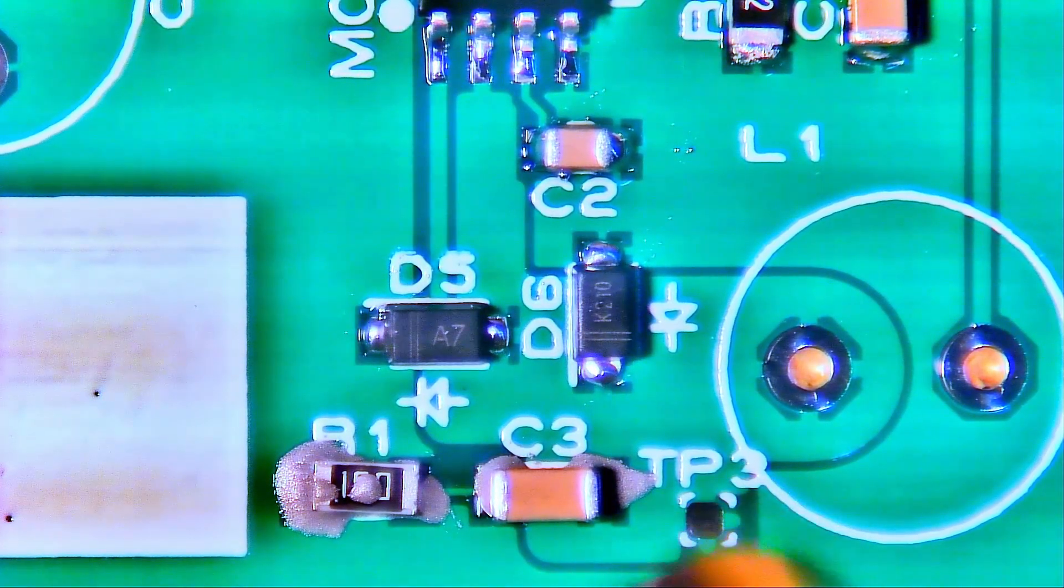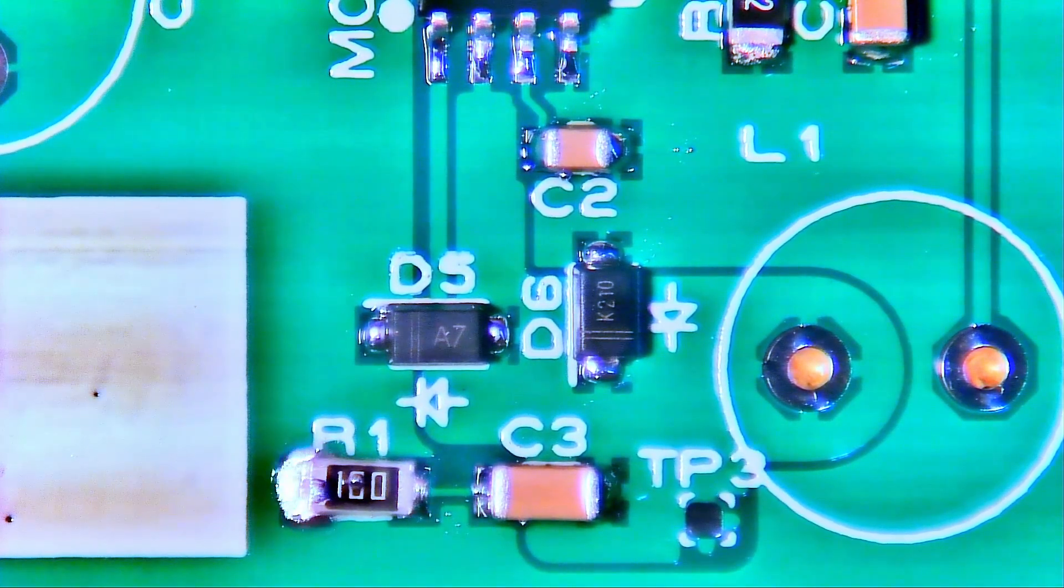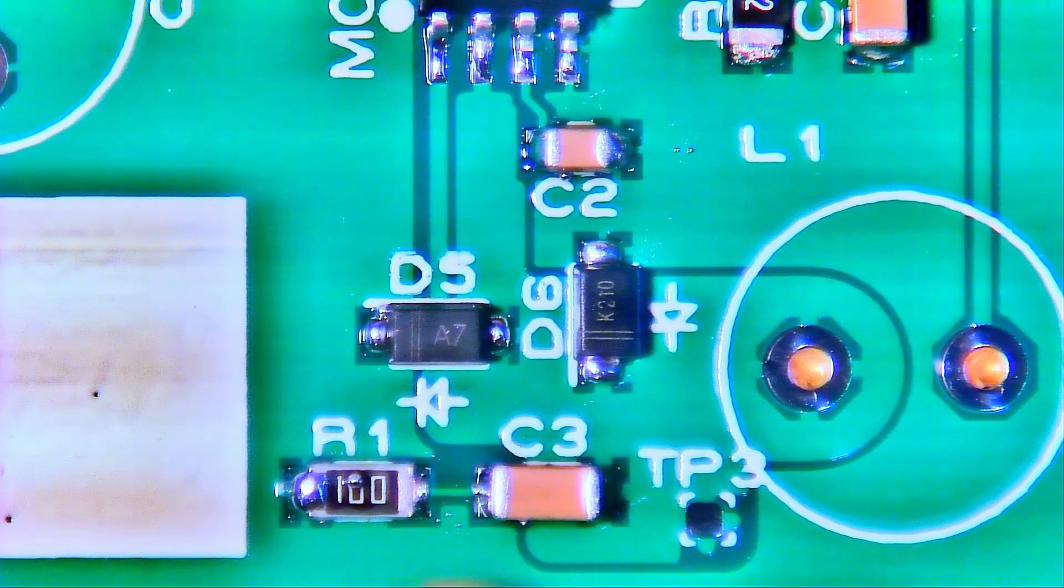And so again, you can see they pull in, and on top of R1 there is a solder blob there, but that's okay.